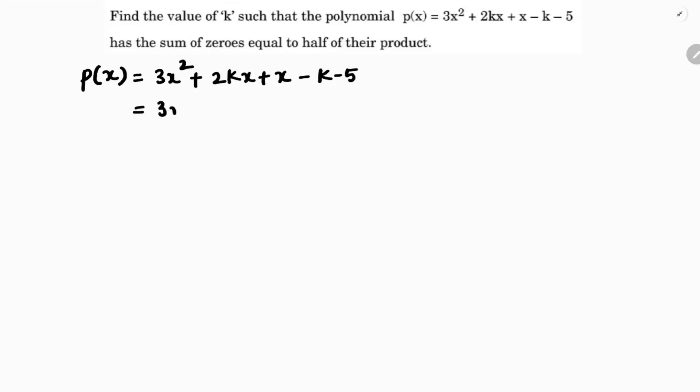If we rewrite this by taking x common from the middle terms: 3x² + (2k+1)x - (k+5).